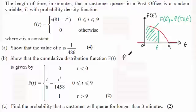So to answer this, then, we've got the probability of T being greater than three. That's going to be equal to one minus the probability of T being less than three. And that's going to be one minus F(3).